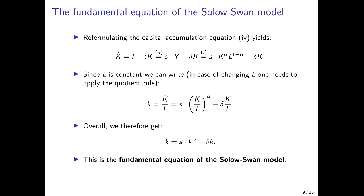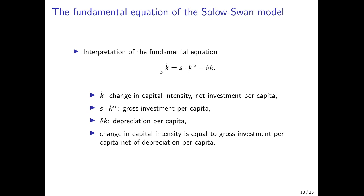The fundamental equation describes the evolution of capital stock per capita. It is positively related to gross investment per capita, s·k^alpha, and negatively related to depreciation per capita, delta·k. If gross investment per capita exceeds depreciation per capita, the capital intensity increases. If gross investment is lower than depreciation per capita, the change in k over time is negative — capital decumulates per capita.